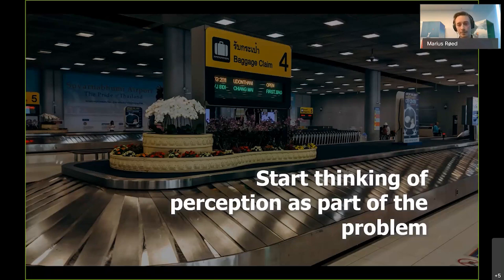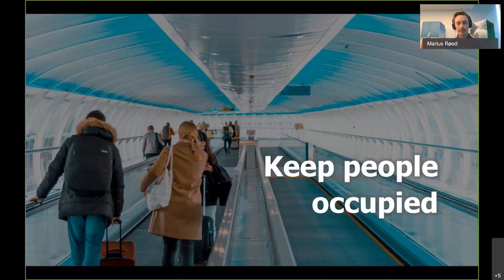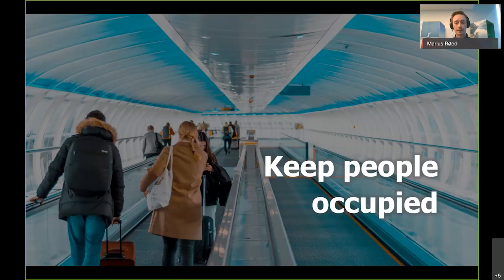Then they started to think about the perception part of the problem. What they actually did — and I think this is a little bit funny — is that they increased the length of the walk from the gate to the baggage claim by six times, so people needed to walk much longer, and all of the complaints suddenly stopped. That's because they kept people occupied while waiting — they were in activity during the same waiting time. The total amount of time from the gate to getting the bag was the same, but the perception of that time went down. The mistake that Houston airport made is something that many web pages often do as well: focusing all efforts on improving page speed while totally forgetting the perception and how that affects user experience.